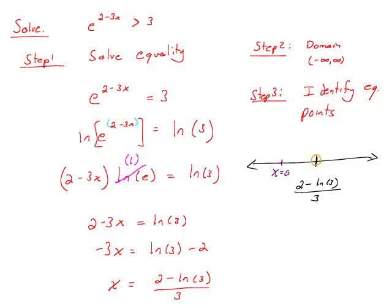So what I'm using here is kind of a test point, and I say, okay, what happens at x equals 0 for the inequality? I'd have e to the 2 minus 3x greater than 3. But I'm going to substitute 0 in for x, and try to determine if this inequality is true or false.